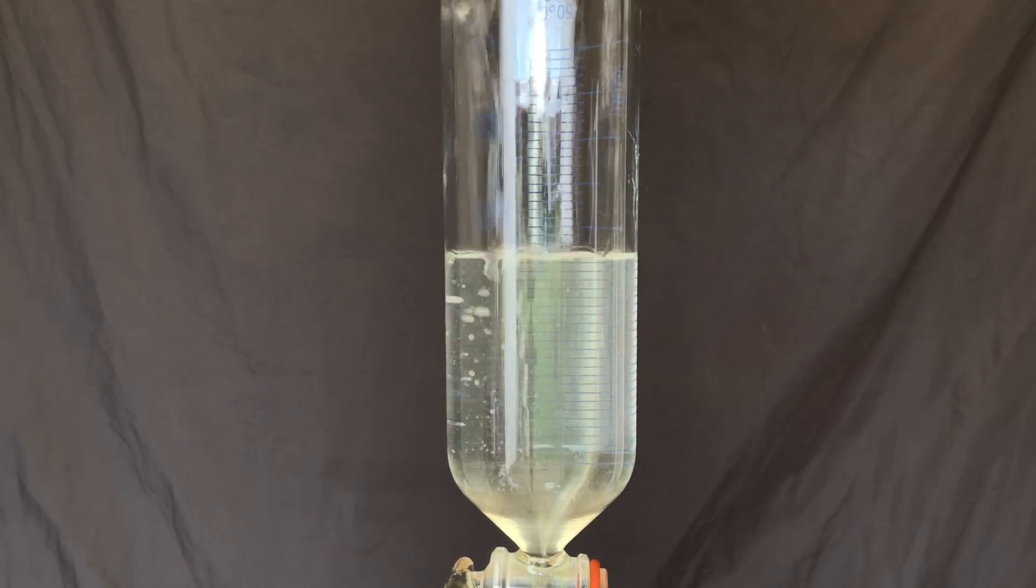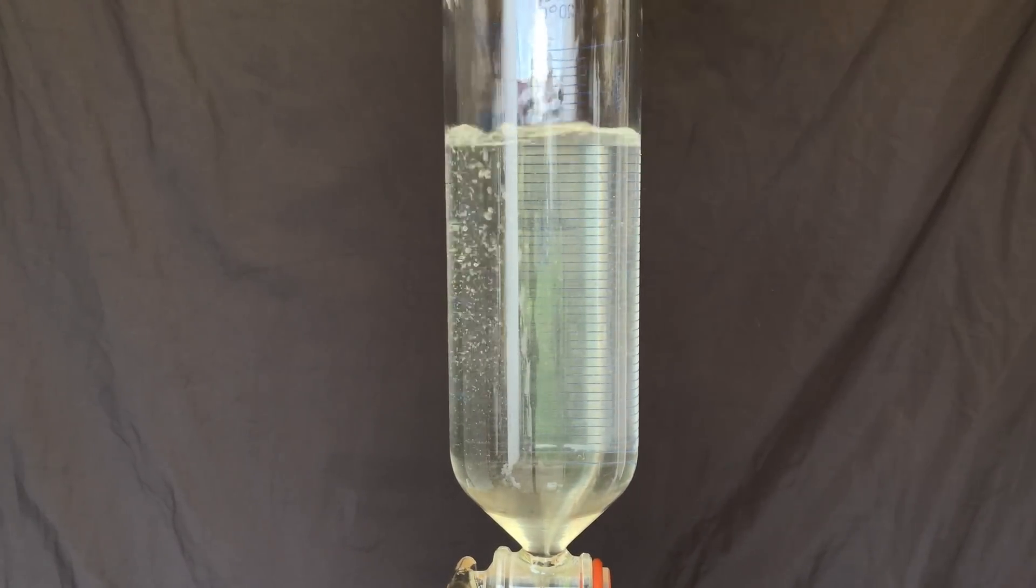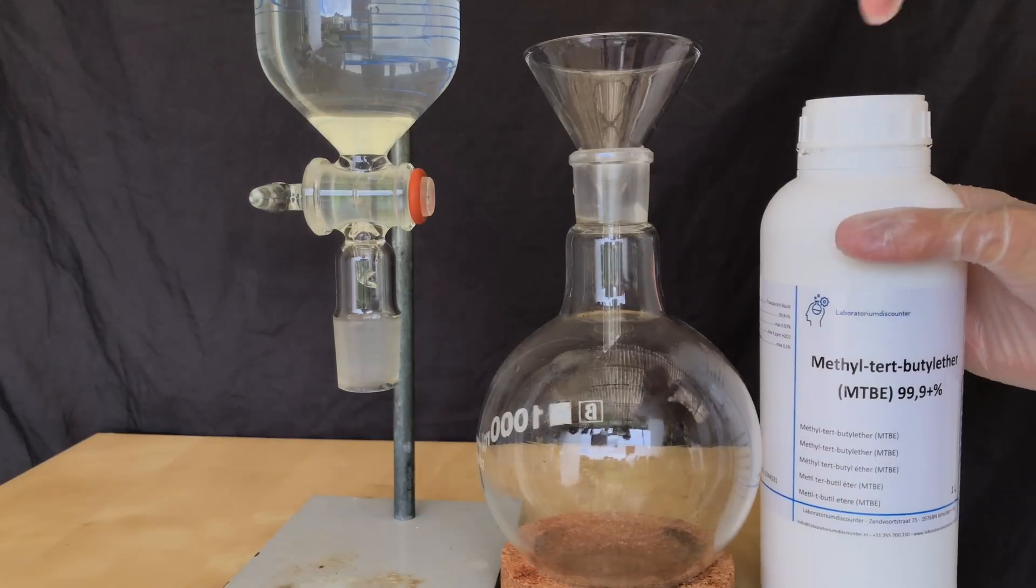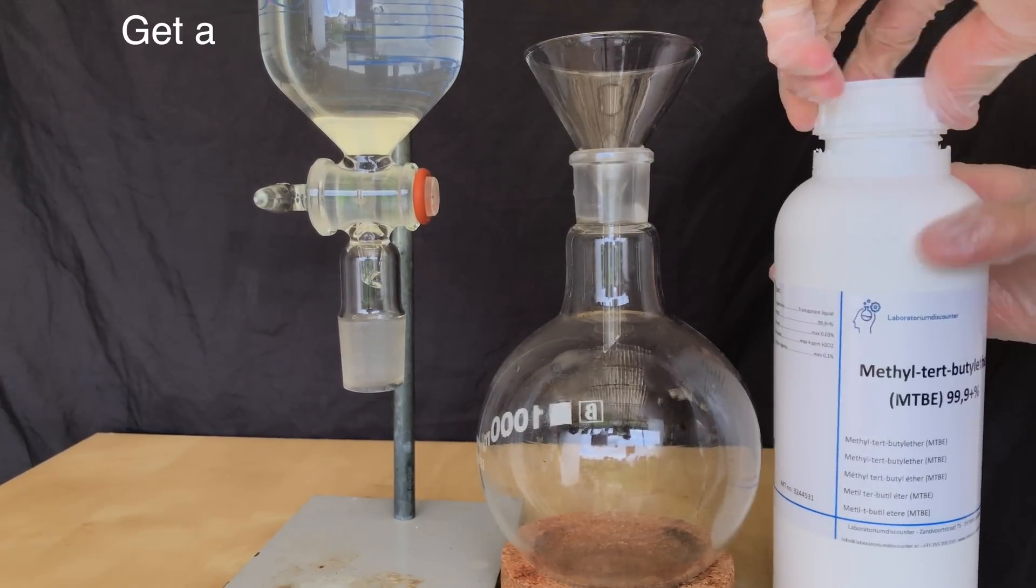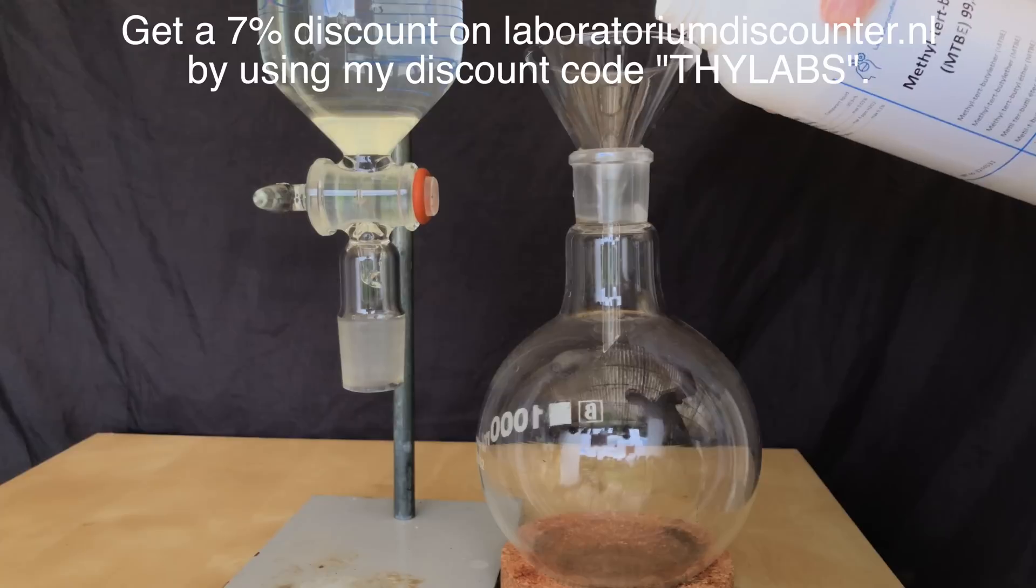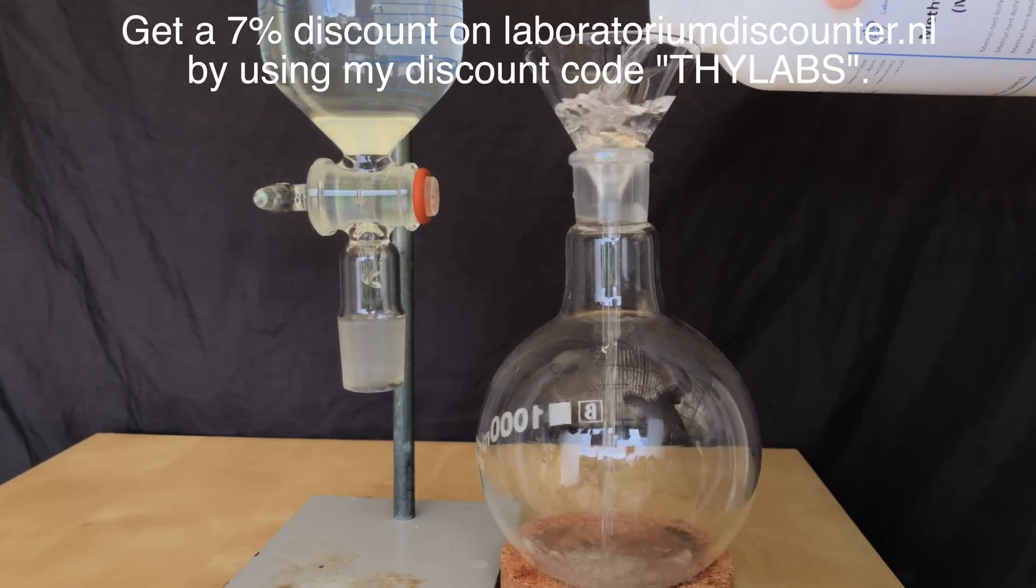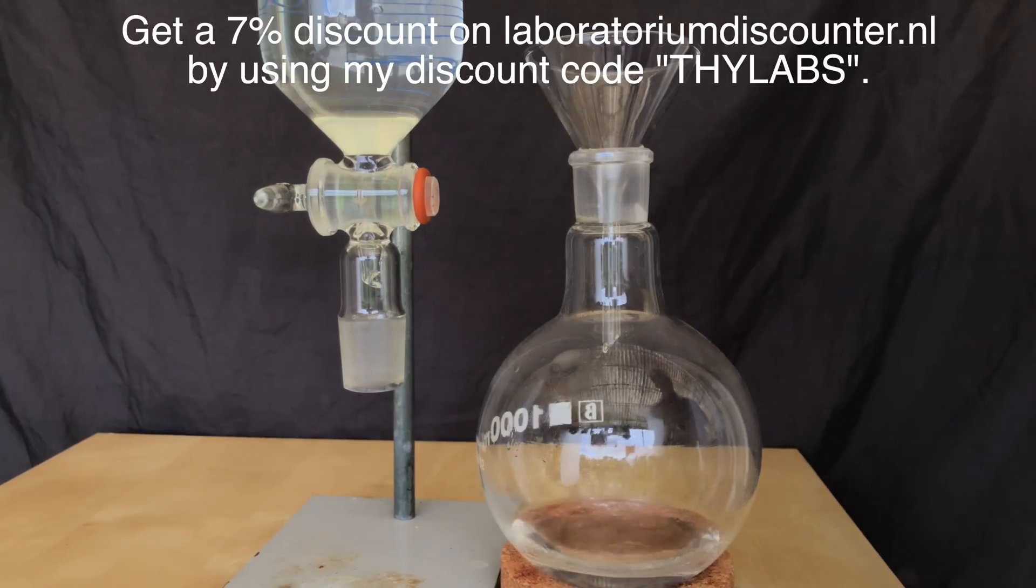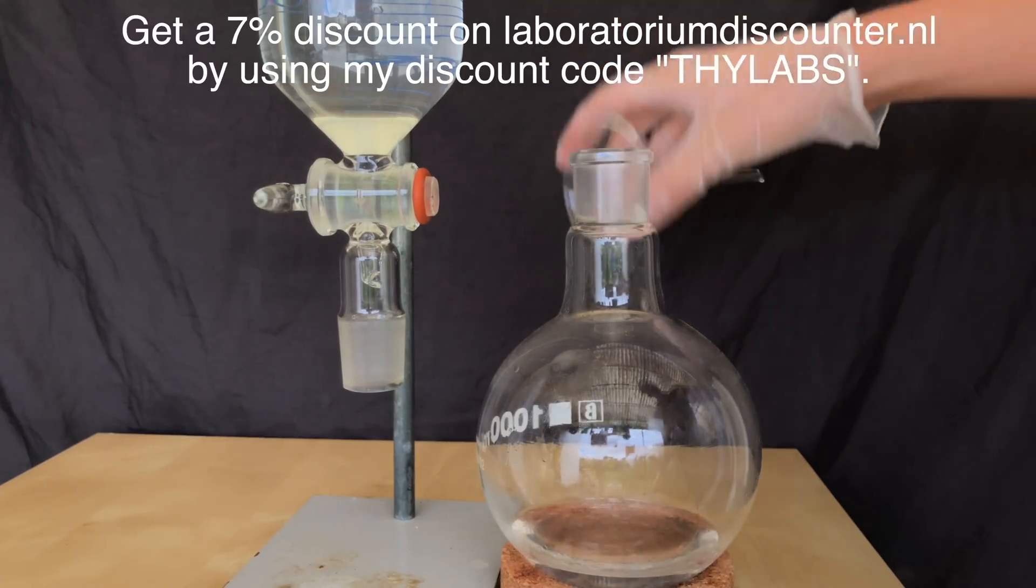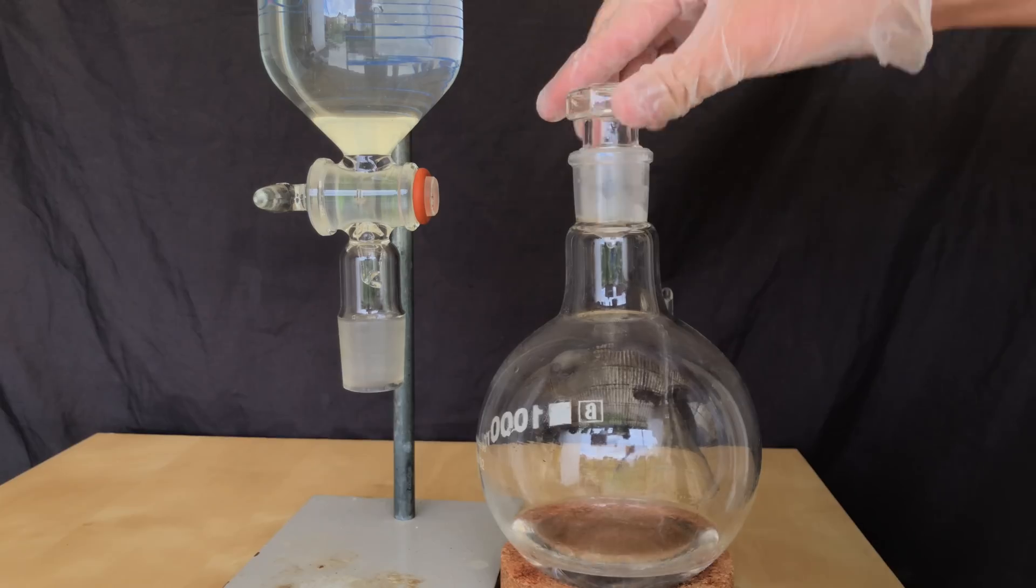To extract the nicotine from the water solution, we are going to use ether. My choice of ether falls onto MTBE because it doesn't form peroxides. Laboratorium Discounter has massively helped me out to produce even better videos. They are selling a lot of useful chemicals, and if you decide to buy from them, make sure to use my 7% discount code Thylabs to also help out my channel.